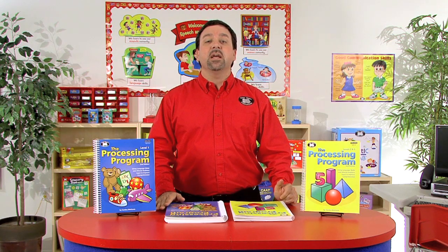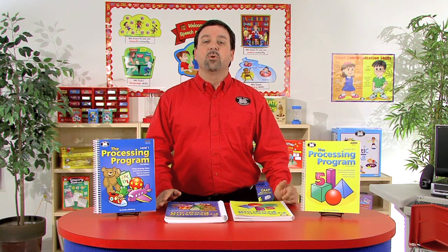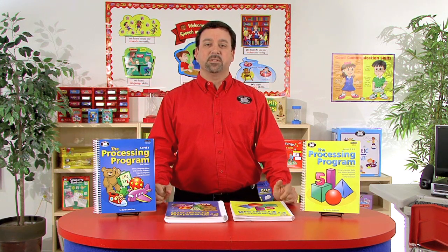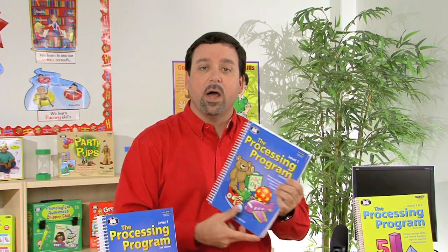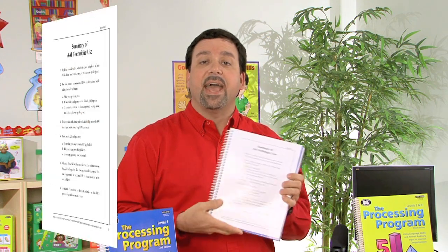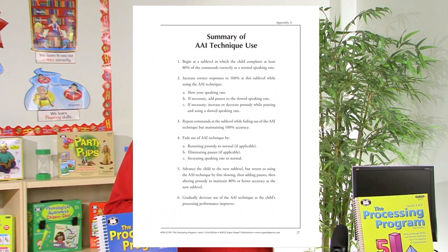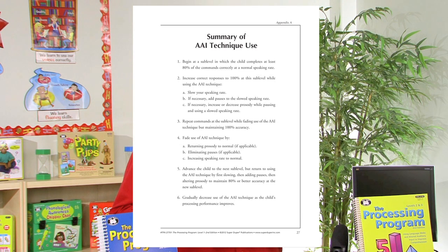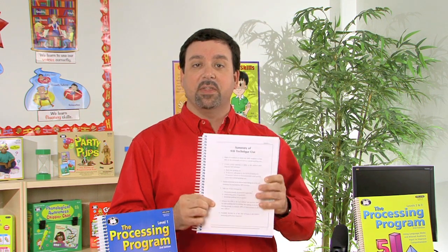With these books, we use fun, colorful picture plates with corresponding directions that are of increasing levels of difficulty. In Level 1, the blue book, there are a few things I want to point out. We're going to have the summary of the AAI technique, where we actually adjust our speed of presentation of material. We'll also use a pattern of pausing and different aspects of prosody when presenting information to the students.